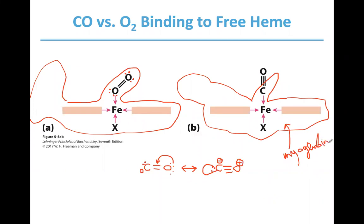When heme is a component of myoglobin, it loses affinity for carbon monoxide quite significantly — yet it's still 250 times stronger. So carbon monoxide is still a potent poison.